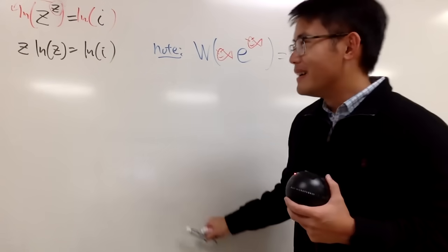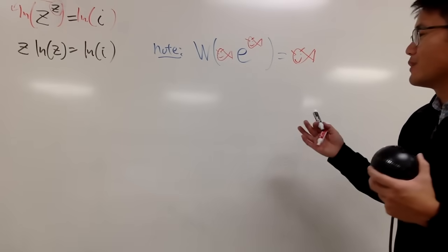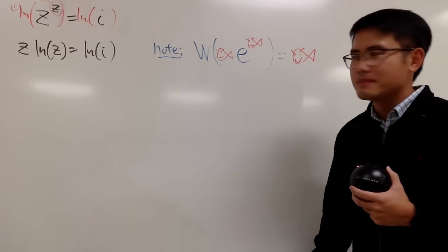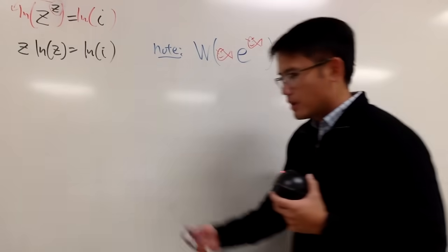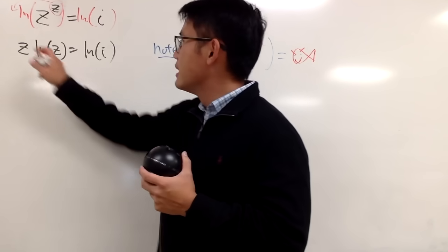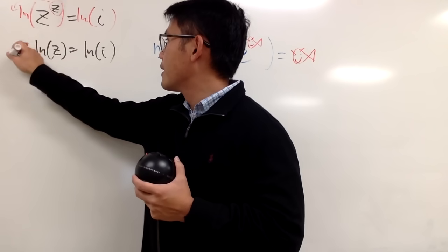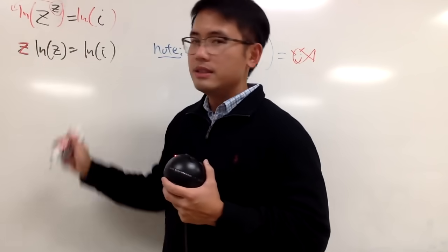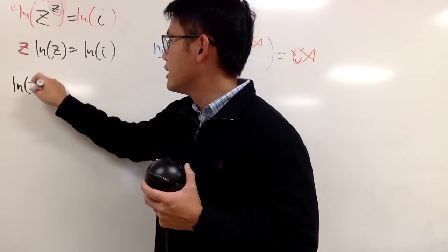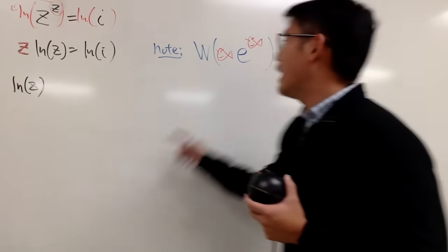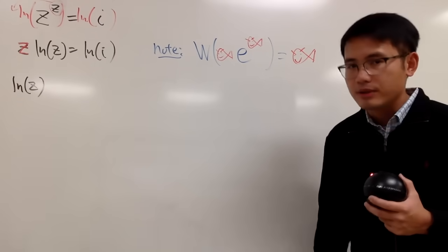Now I just have to somehow produce the e so that I can make things happen. How can we do that? If you look at this z right here, I have the ln z already. Let me write that in the front, ln z, like this.